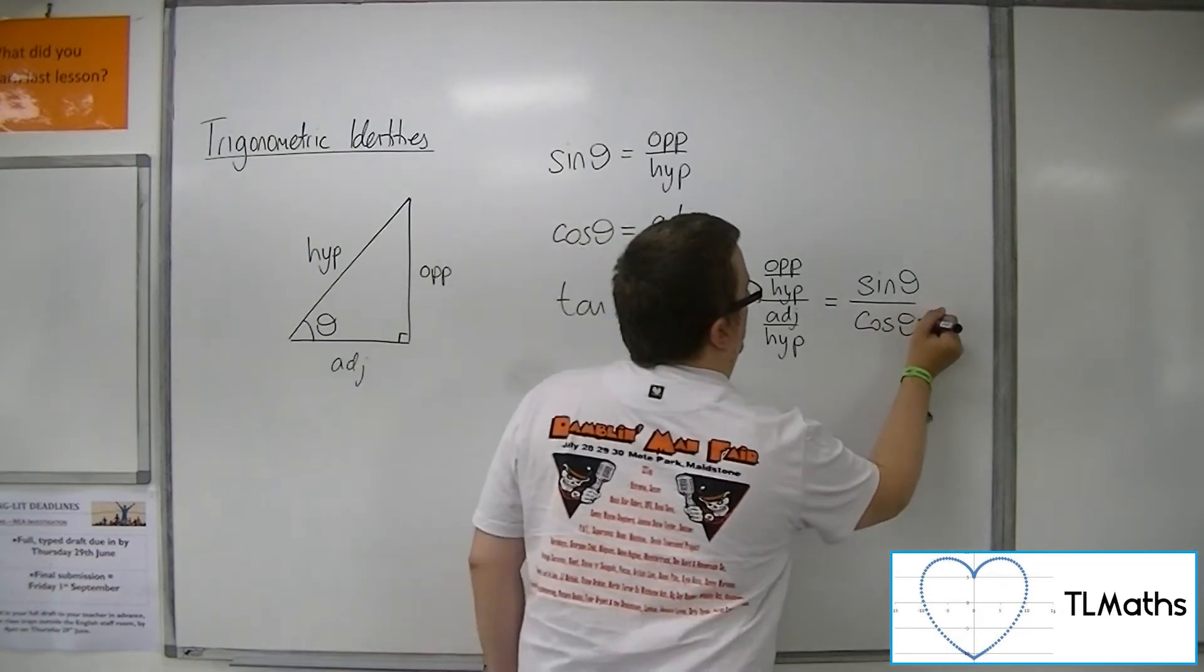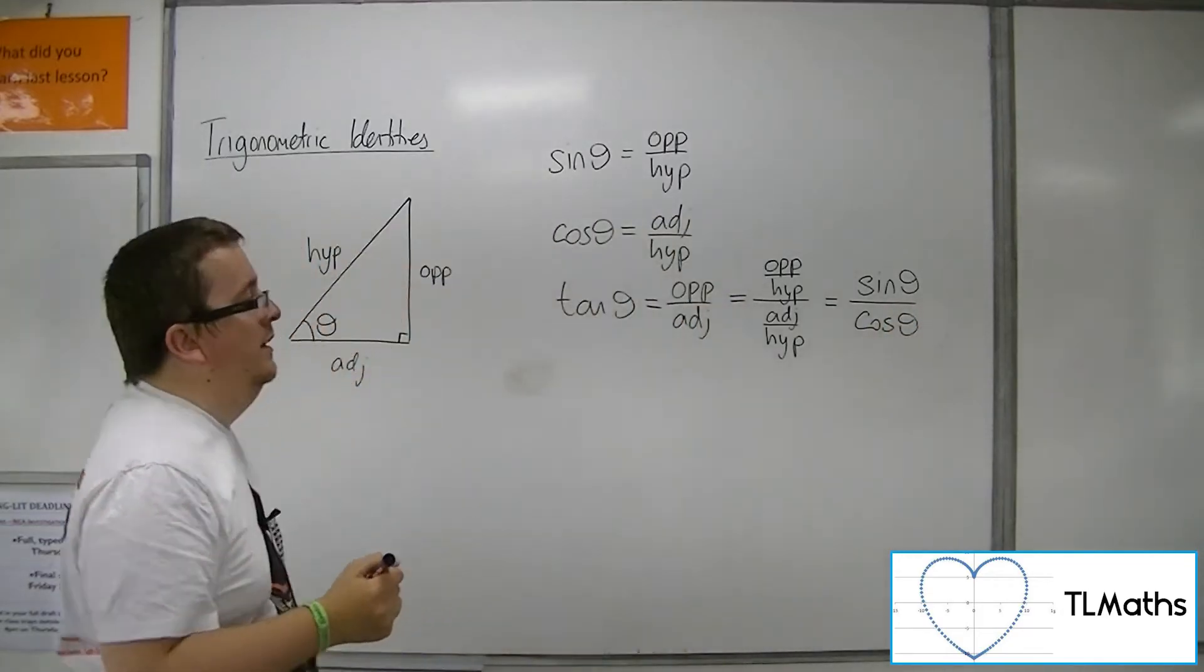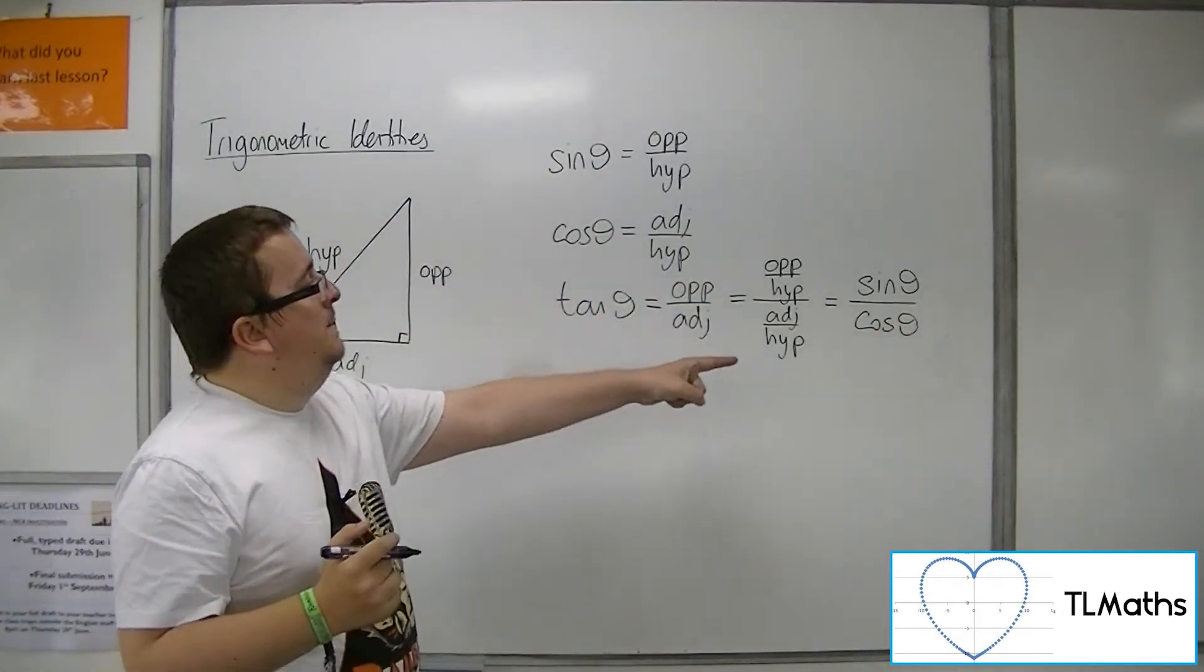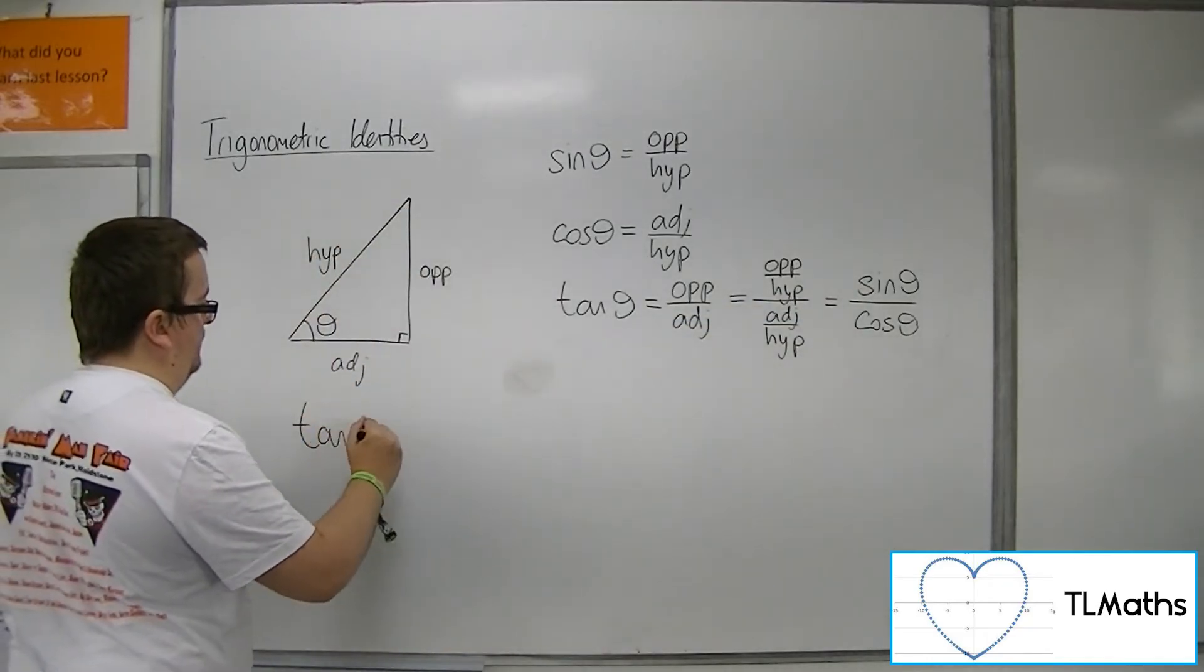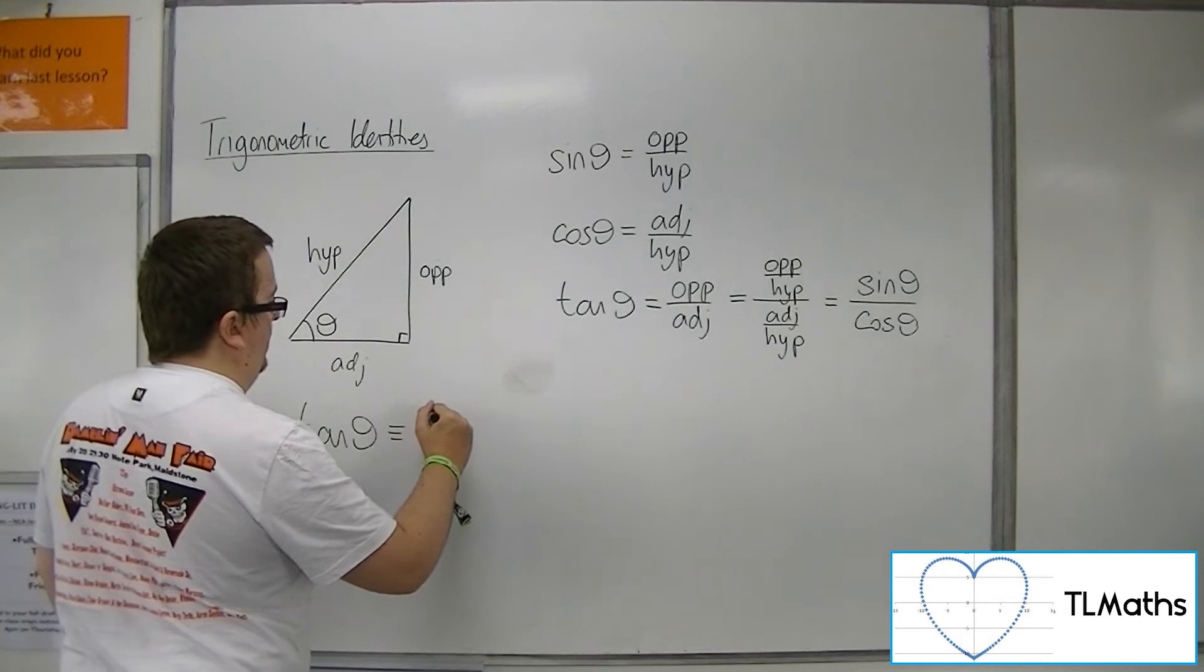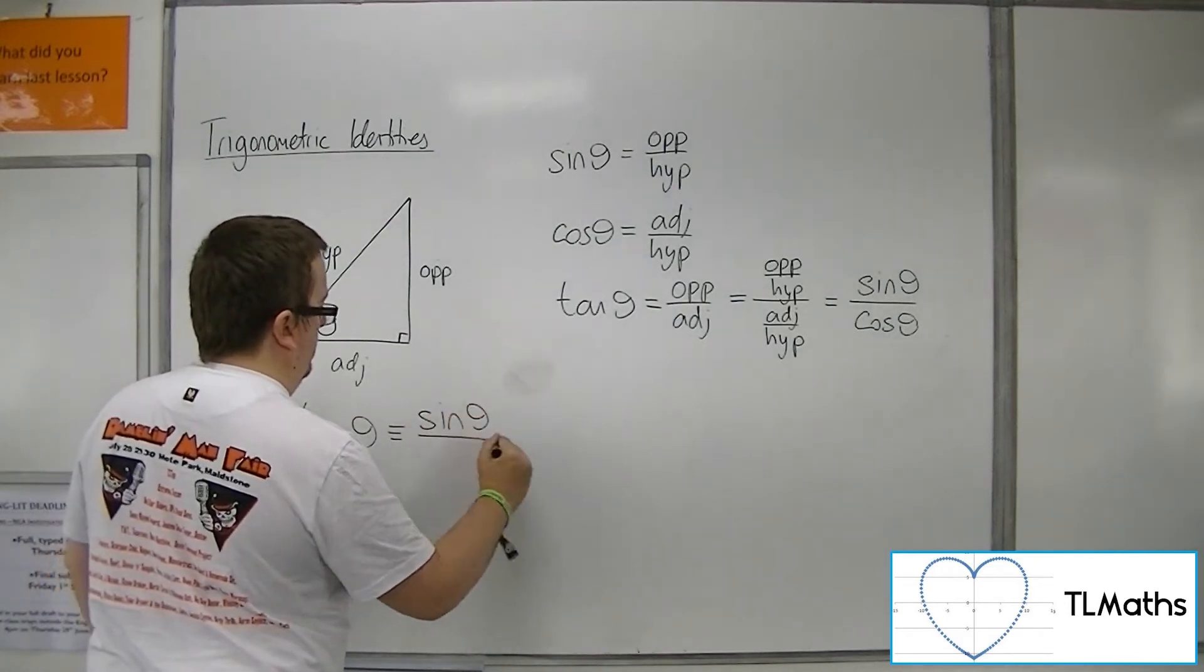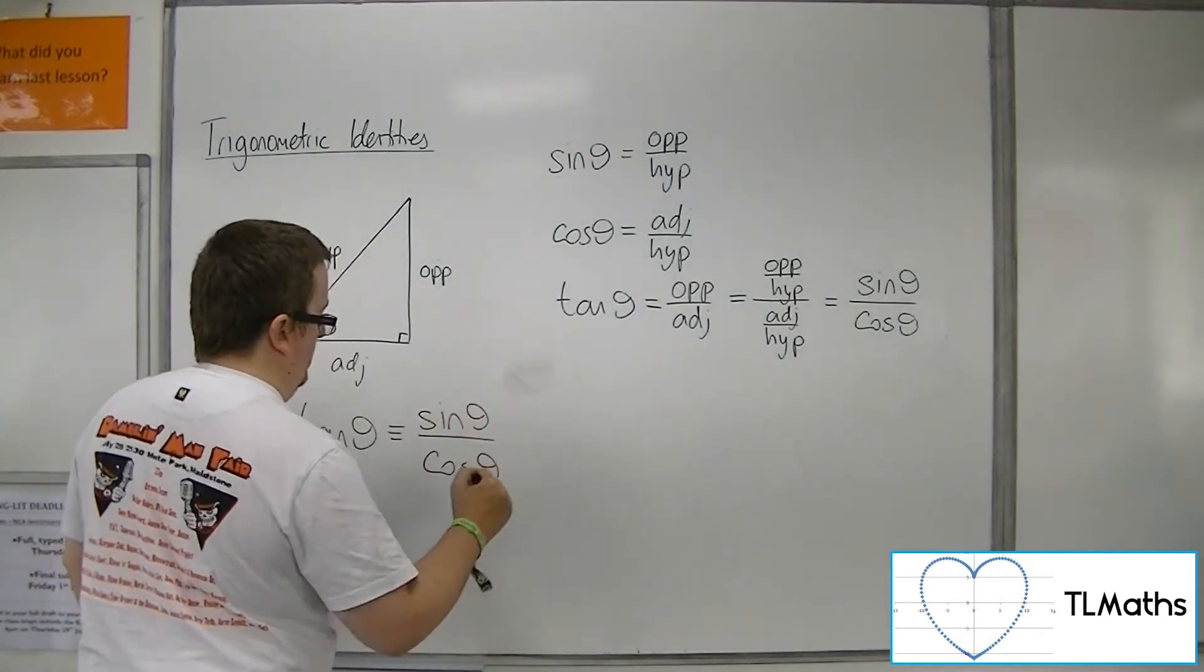So tan of theta must be the same as sine theta over cosine theta. And that is a trigonometric identity.